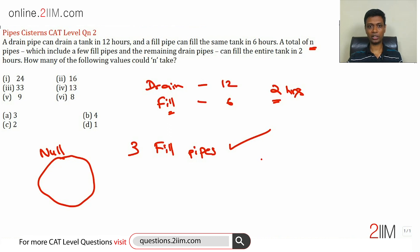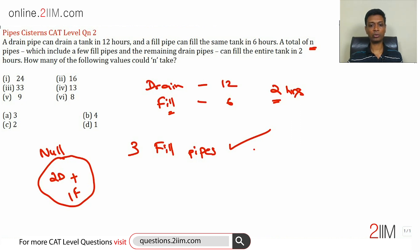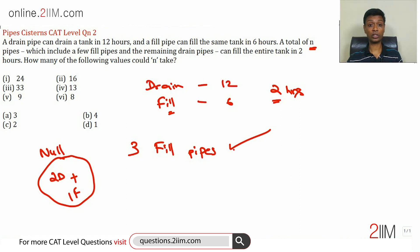Two drain pipes. One drain pipe drains in 12 hours, so two drain pipes drain in six hours — same as one fill pipe. So two drain pipes plus one fill pipe gives us nothing. If we keep two drain pipes and one fill pipe operating throughout, the tank will neither get filled nor drained — a null system. Four drains and two fills gives nothing, six drains and three fills gives nothing — any multiple of this will give nothing.